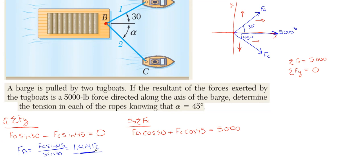So we're going to take this and plug it in for F_A. Plugging this into the F_x equation becomes 1.414 F_C times cosine of 30 plus F_C cosine of 45, and that has to equal 5,000 pounds.